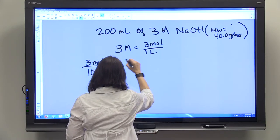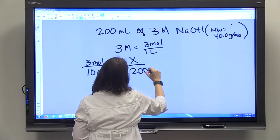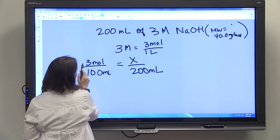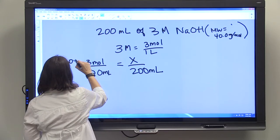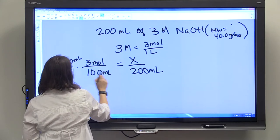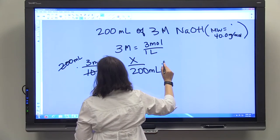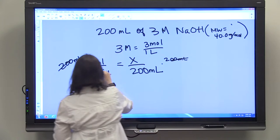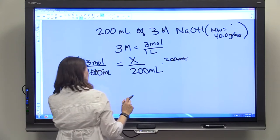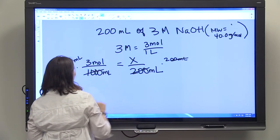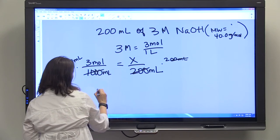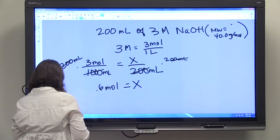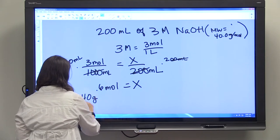So we're going to know that that equals X out of 200 mL. We're going to multiply both sides by 200 mL. This should be a thousand, not just a hundred—that's why it wasn't working out in my head. So this is going to be 0.6 moles, which is how many moles we need to add. And then we just know that 40 grams per mole...